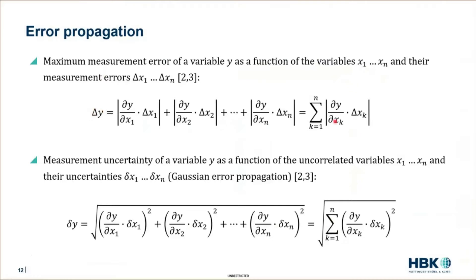You can see that for the maximum error, we sum up the absolute error influences. I call it error influences because it's not only the error, it's the error multiplied with the sensitivity coefficient, which is the partial derivative. The most important is we sum up the absolute value of these individual error influences.